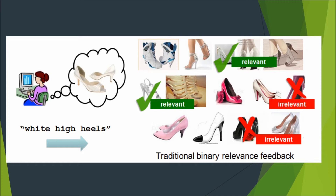Existing image search methods rely either on keywords or on content-based retrieval. In these methods, if you don't find what you're looking for right away, you can refine your query and say, show me more results like these two. However, you can't really say similar how or similar in what way. This puts you right back to simply hoping that your target is in the next pool of results.